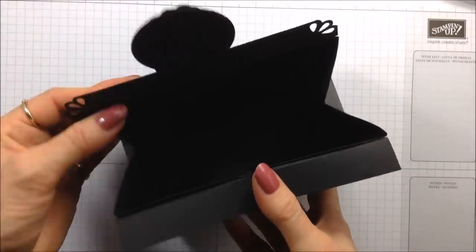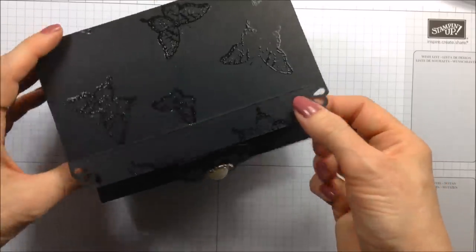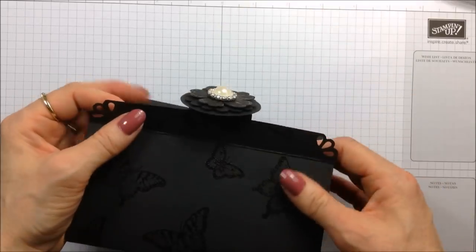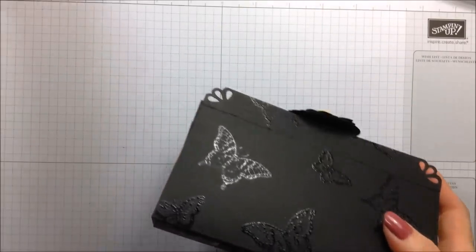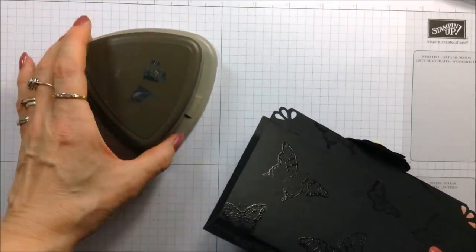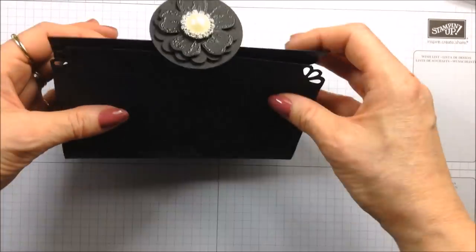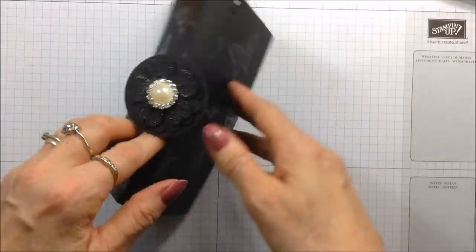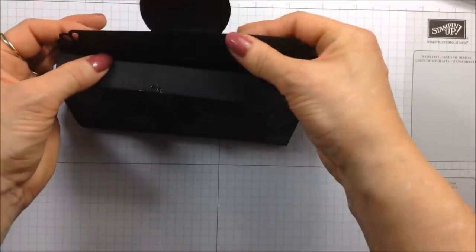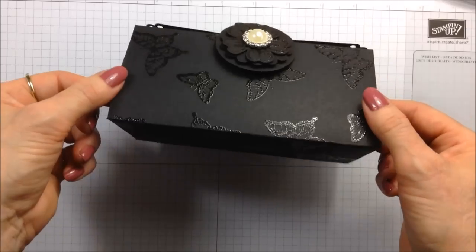You can see here on these corners that I've punched out a pretty detail using the new curvy corner trio punch from Stampin' Up, which is in the new autumn winter catalog. So that's my box, and I'm going to get on now and show you how to put one together.